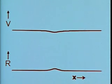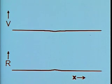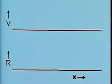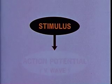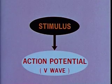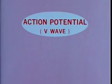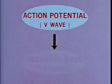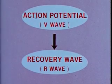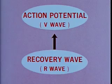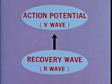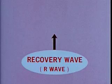At any point on the fiber, the following sequence of events occurs during an impulse. If we now focus our attention on a single point of the fiber which is being stimulated, the stimulating current initiates a V wave, which in turn starts an R wave. The R wave brings the V wave to an end and then slowly disappears, leaving the membrane ready for the next stimulus.